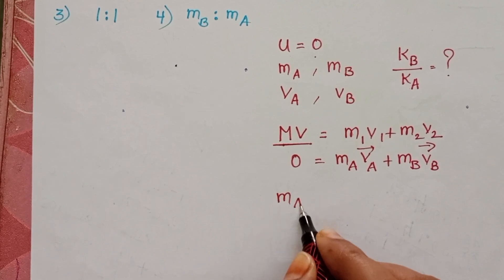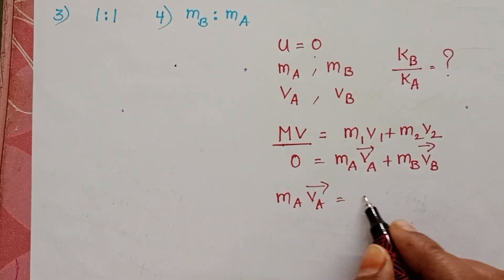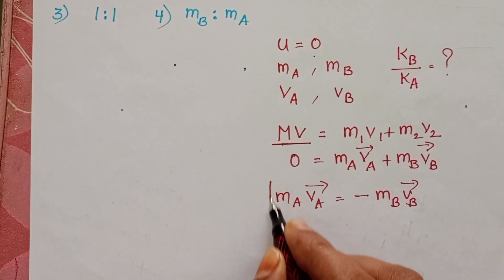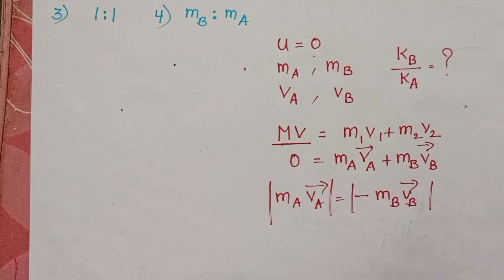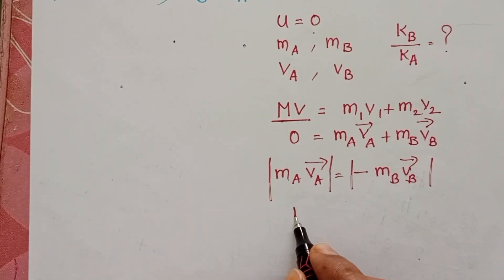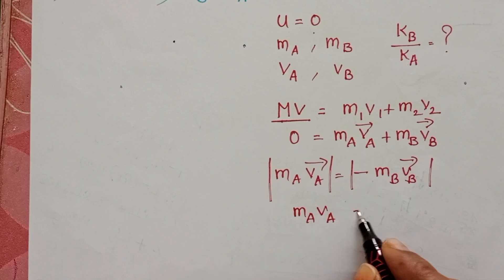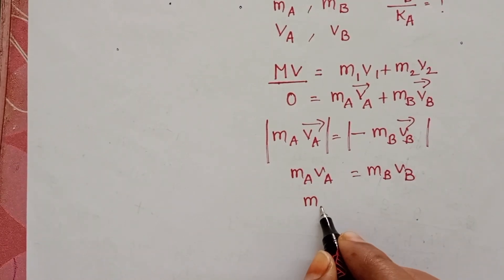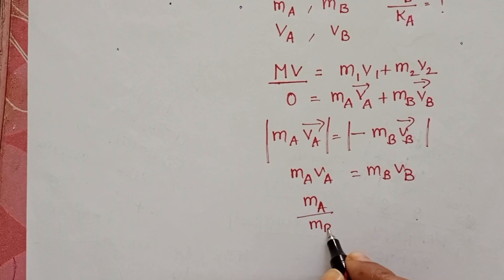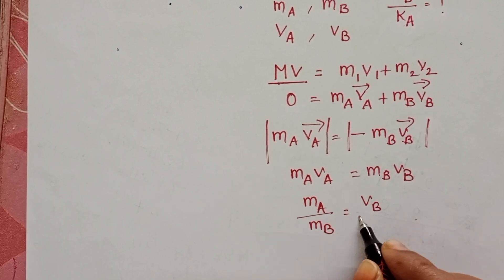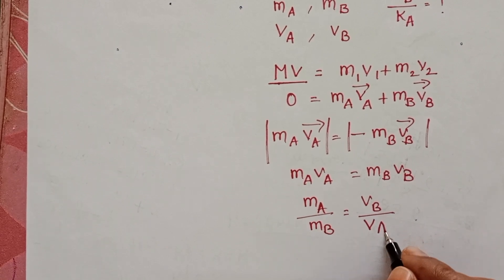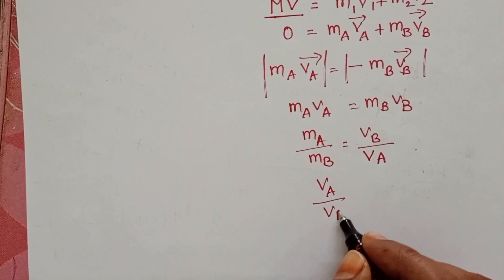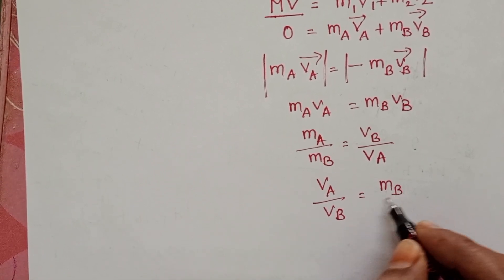From the vector equation, Ma·Va = −Mb·Vb. Taking only magnitudes, Ma·Va = Mb·Vb. Therefore, Ma/Mb = Vb/Va, or equivalently, the ratio Va/Vb = Mb/Ma.